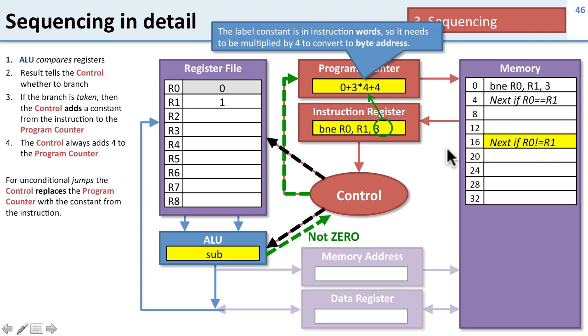This is different for unconditional jumps. For a jump, you just replace the value of the program counter because it's not an offset. We'll learn the details when we talk about instruction encodings in the next lecture.